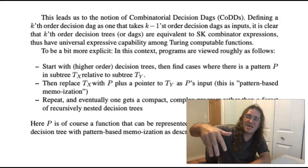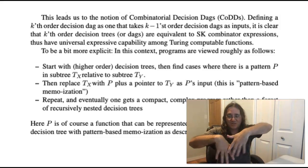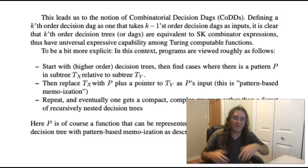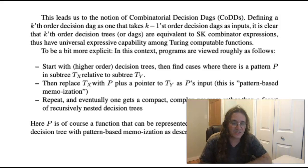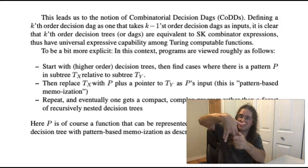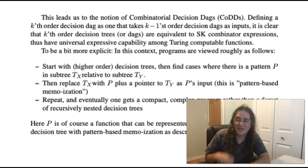So going from a decision tree to a decision DAG is nothing new. Basically if you have a binary decision tree which has repeated subtrees, you can just leave only one copy and anything that pointed to the other copies points to that one copy. And that goes from a decision tree to a decision DAG. But what I want to do here is something a little more general.